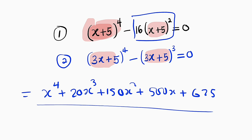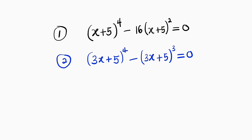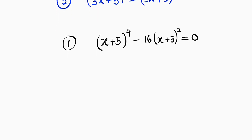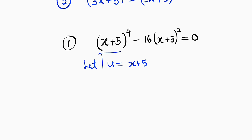Let us just substitute and see. Here is our first problem. The terms are exactly the same, so I can let them equal to something else. Let u equal to x plus 5. In the end we are going to solve the equation in terms of u, but since originally it was in terms of x, we have to substitute back in the end. So wherever we have x plus 5, it will be replaced by u.